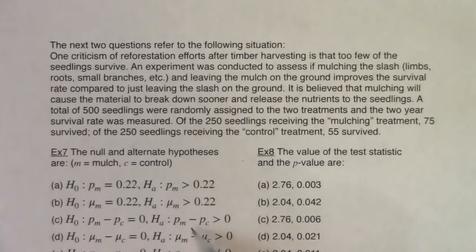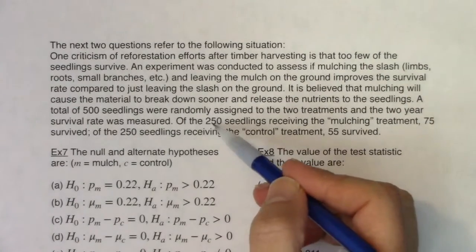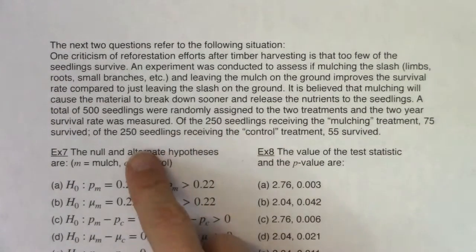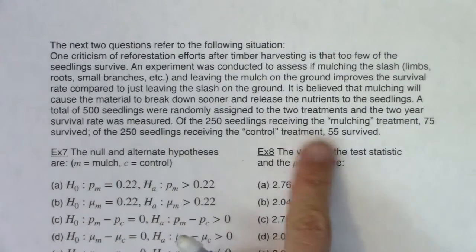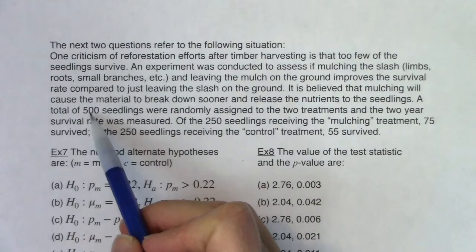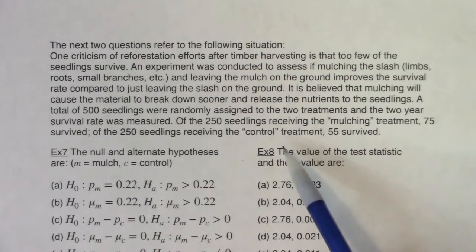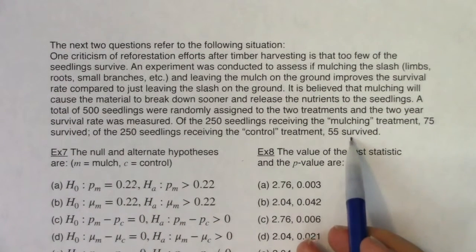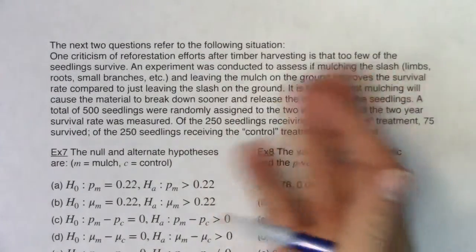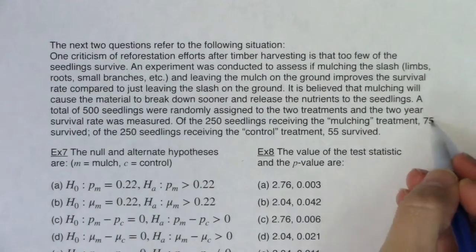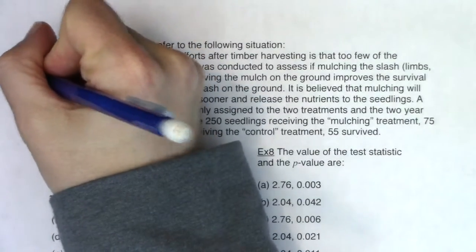What should my null and alternate be? As I look through this, things I notice: there are no units. I see numbers — 75, 250, 250, 55 — and it's 'of the 250 seedlings,' which sounds like a probability or a condition. Of these seedlings I had 75 successes; of these seedlings I had 55 successes. And the variable I'm keeping track of is survival — whether a seedling survived or not — which is a categorical variable: yes it survived or no it didn't. Without units, without anything about averages, seeing 75 of 250 and 55 of 250, those sound like proportions. I can see I'm in proportion land.